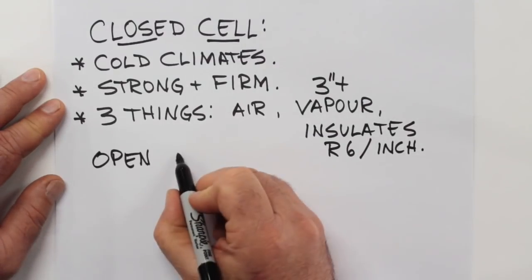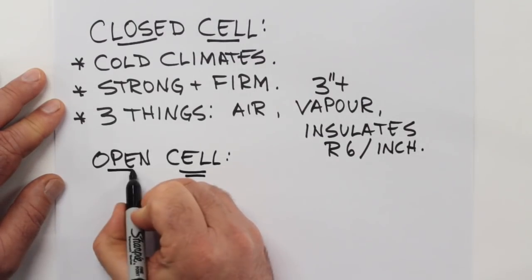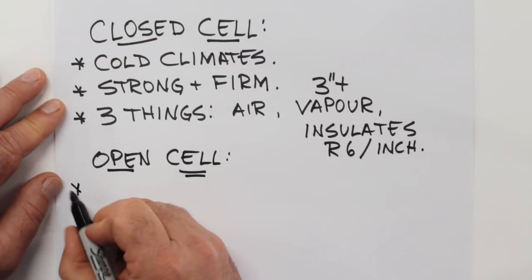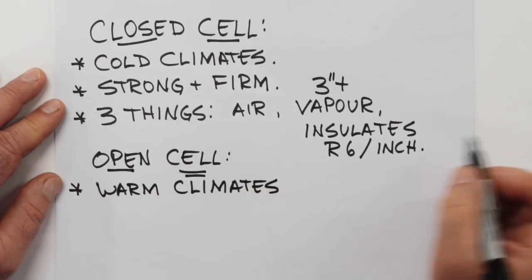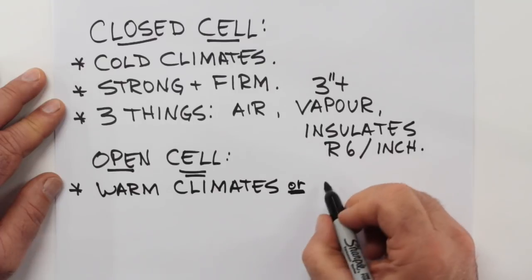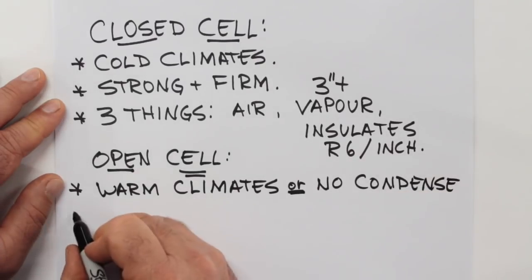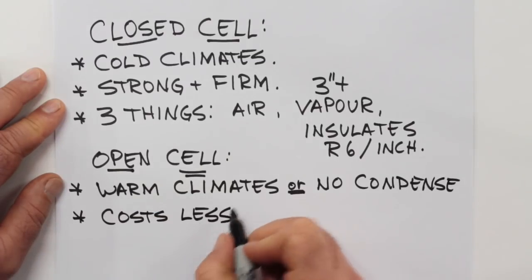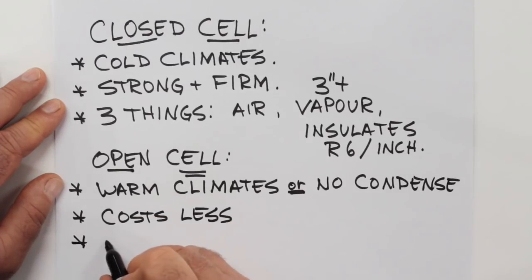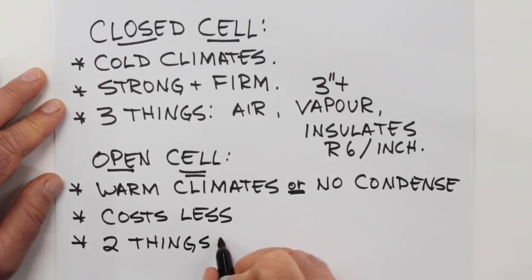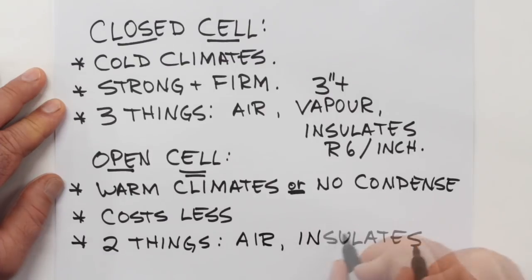Open cell spray foam is most useful in warm climates where you'll have air conditioned spaces, or anywhere where you're not going to have a condensation hazard. Open cell costs less than closed cell and it does two things particularly well. First of all, it blocks air movement and it delivers insulation at a rate of about R3.5 per inch.